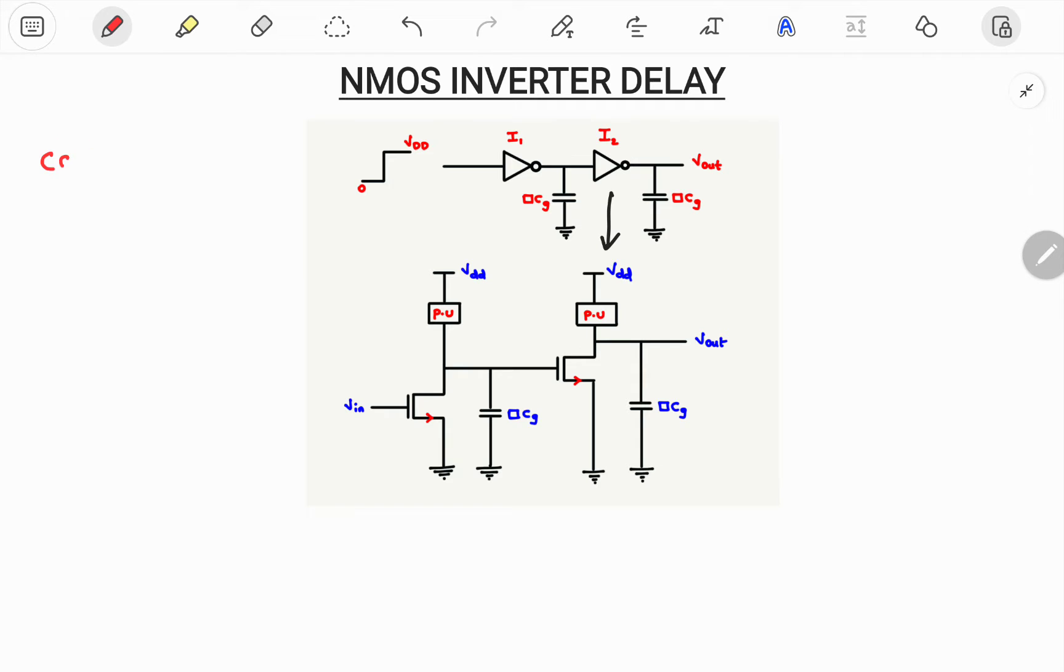So let me take case number 1. In case 1 I will apply Vin equals VDD which you can consider it as logic 1 or else you can consider it as 5 volt. So if I apply here it is 1, this particular NMOS will be in ON state. So if it is in ON state, this particular load capacitor starts discharging.